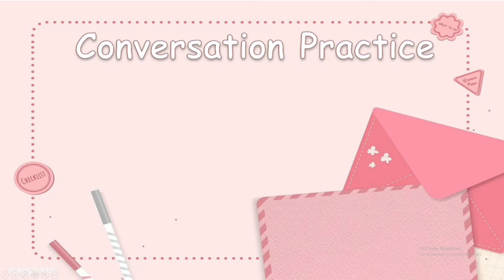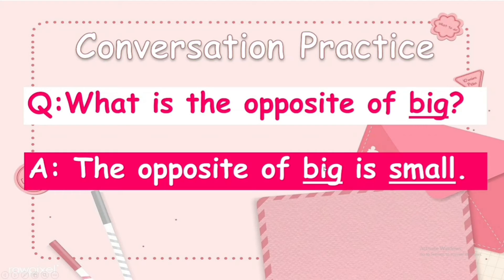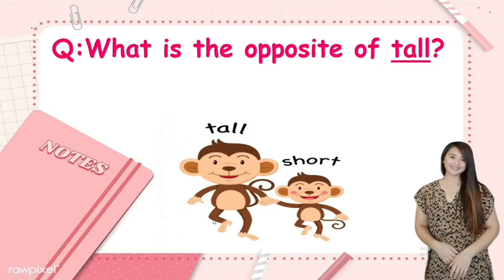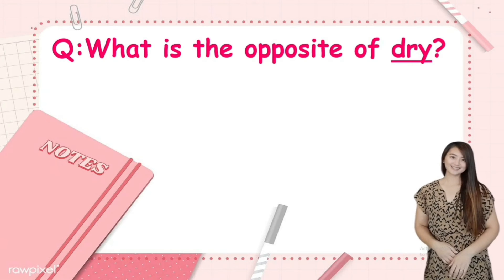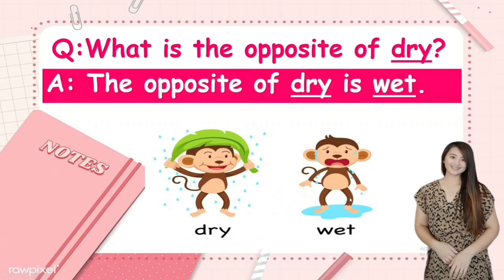Those are examples of opposite ways. Now let's have conversation practice. The question is: what is the opposite of blank? What is the opposite of big? The opposite of big is small. What is the opposite of tall? The opposite of tall is short. What is the opposite of dry? The opposite of dry is wet.